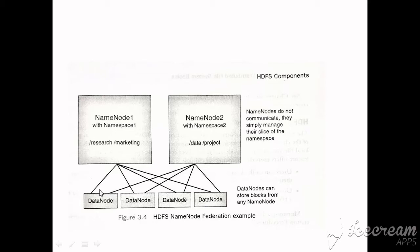You can see that data node 1 has two links — one going to name node 1 and one to name node 2. Similarly, data node 2 also has links to both name node 1 and name node 2. Before performing any operation, all data nodes must register with all name nodes available in the cluster. This is about HDFS namespace federation.